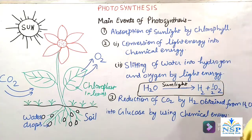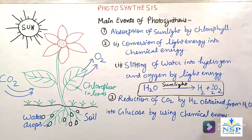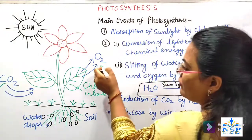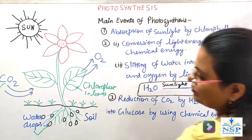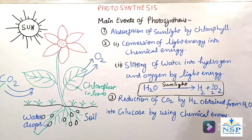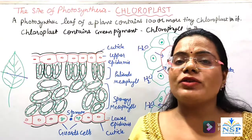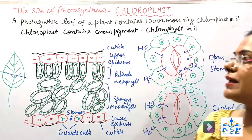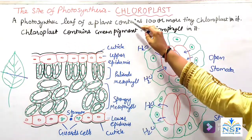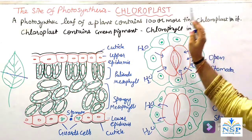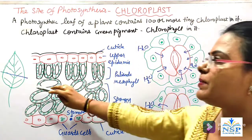दूसरा question आपका आता है — what are the raw materials of photosynthesis? The raw materials of photosynthesis are carbon dioxide and water. What is the site of photosynthesis? The chloroplast is the site of photosynthesis, present in the green leaves of plants.